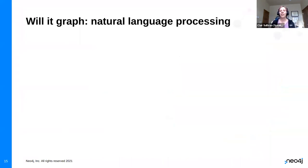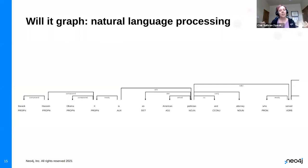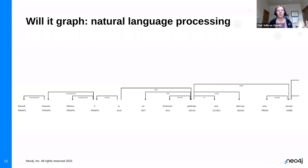Natural language processing — will it graph? Yes. Here's an example: a sentence from Wikipedia's first summary for Barack Obama, shown as a dependency graph, looking at what words are dependent on what other words. Central nodes have everything coming out of them, like the word 'is' — considered the root. It has a high degree, and we might assume that 'Barack,' 'Hussein,' and 'politician' are words that should go together.